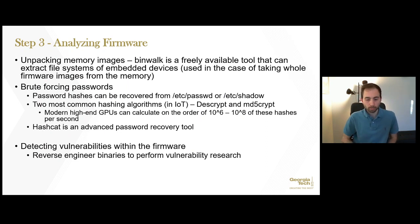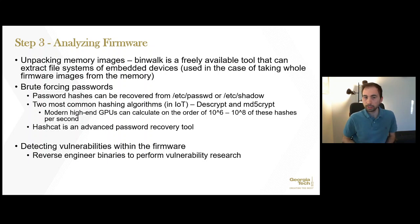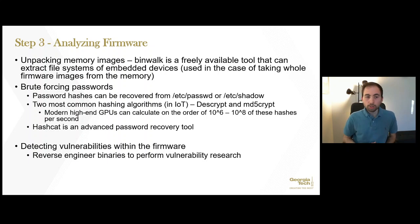Finally, for step three: with the file system or firmware extracted, it was time to analyze it. In the case of no network connectivity, the raw firmware image needed to be extracted, and a freely available tool called Binwalk can extract file systems from embedded devices. From here, the researchers proceeded to look for password hashes. With the file system exposed, they browsed to the /etc/passwd or /etc/shadow file to obtain the hashed passwords. The two most common hashing algorithms in IoT devices are DES crypt and MD5 crypt. Modern high-end GPUs can calculate on the order of 10^6 to 10^8 of these hashes per second.